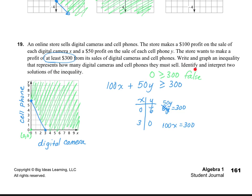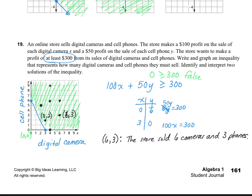The last part is to identify and interpret two solutions. There are many points in the shaded region. I'll choose (6, 3) and (3, 2). The point (6, 3) means the store sold six digital cameras and three cell phones. The point (3, 2) means the store sold three digital cameras and two cell phones. That's it — thanks for watching!